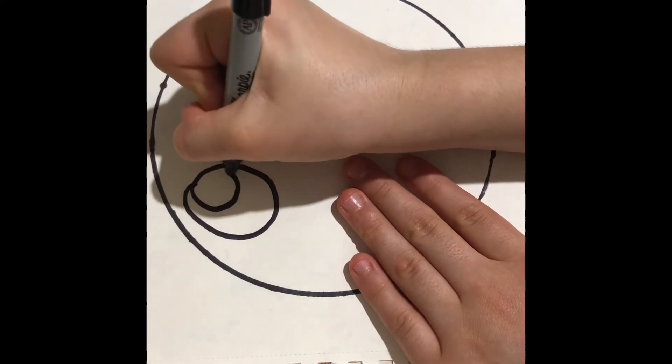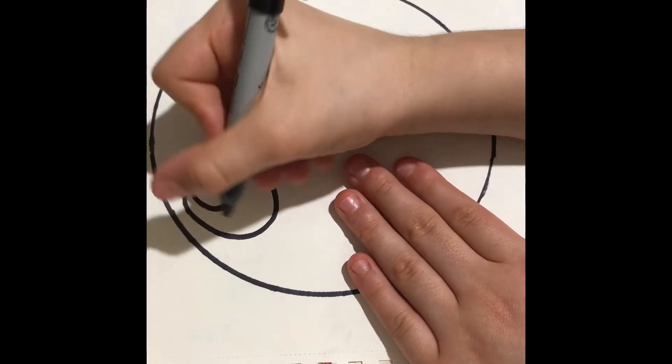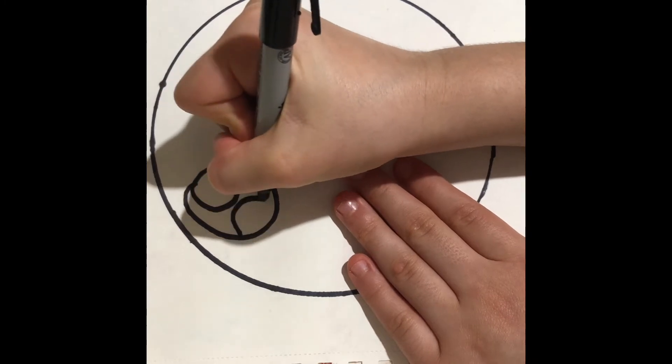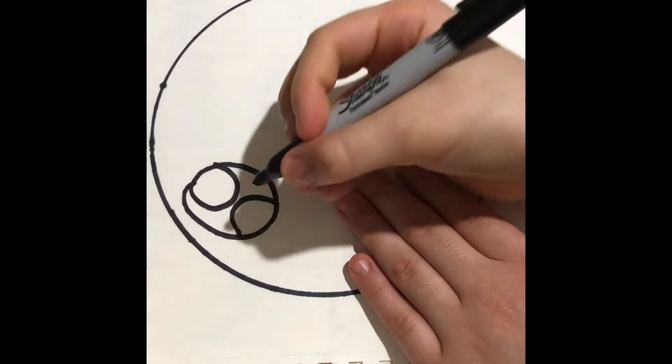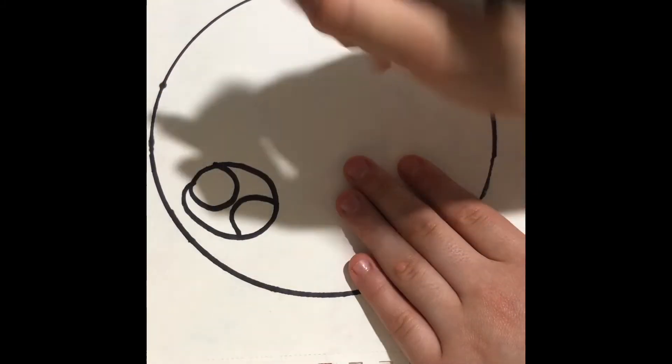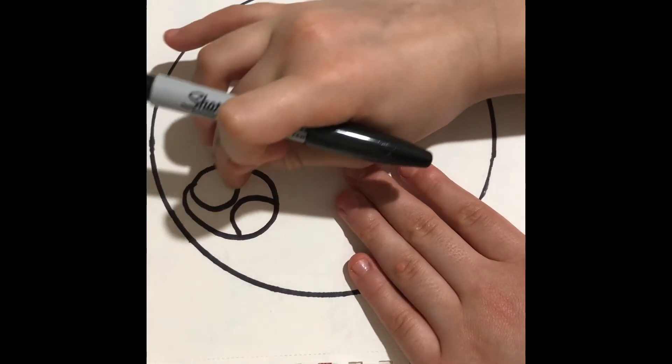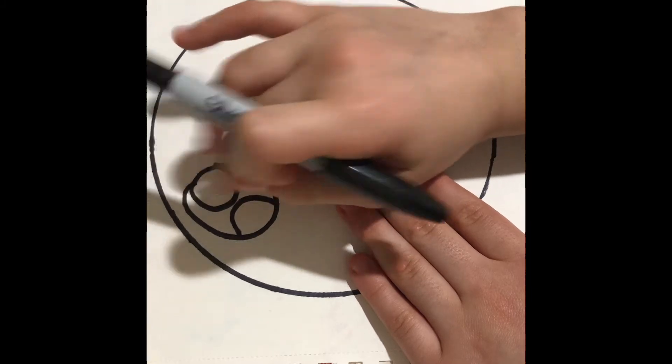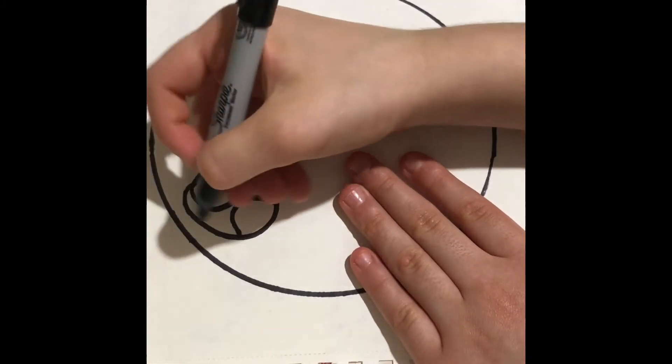And then we're gonna do another circle inside just like that, and then we're gonna do another circle on the other side just like this. There you go, and then we're gonna color in just how we did the bunny. We're gonna color in the big circle but make sure the little circles are not colored in with sharpie.